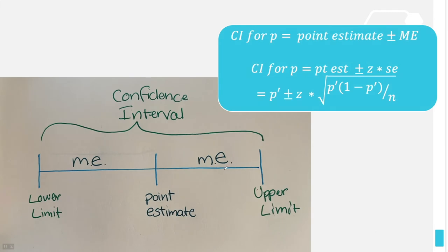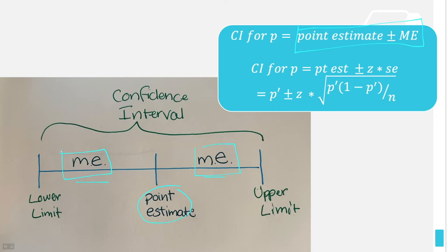Any confidence interval can be expressed as the point estimate plus or minus the margin of error, because we start with our point estimate and go a margin of error to the left and right. If you're given only the confidence interval and asked for the margin of error, two margins of error equals the width of the interval — so subtract the lower from the upper limit and divide by 2. For proportions, the point estimate is p-prime, and we always use z-scores (not t-scores) with proportions.